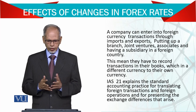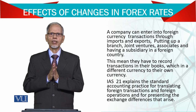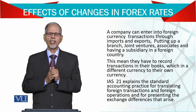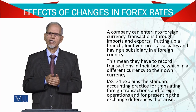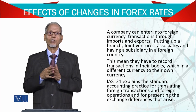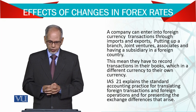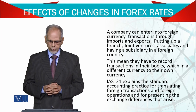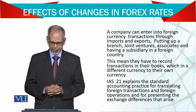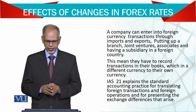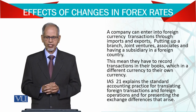Putting up a branch is also possible. Agar aap ne koi branch rakhi ho, say the branch is running all business abroad, woh aap ko end of the month, end of the year, ek trial balance bhej denge. Woh trial balance jo hai, pehle us dollar mein aa rahi hai, toh aap ne us ko translate karna hai pak rupee mein. Unhein question hai ke kaun sa rate use hoga, kaise us ko translate karen ge. This means they have to record transactions in their books which are in a different currency to their own. IAS 21 explains the standard accounting practices for translating foreign transactions and foreign operations, and for presenting the exchange differences that arise.